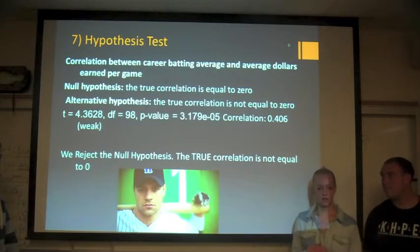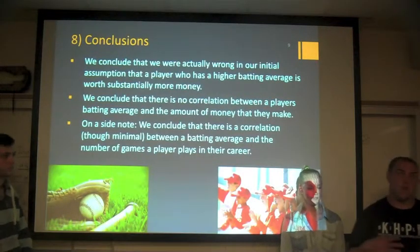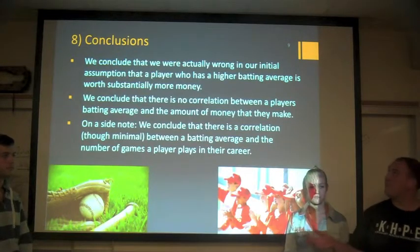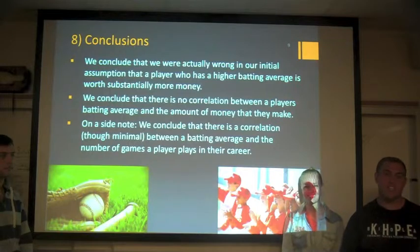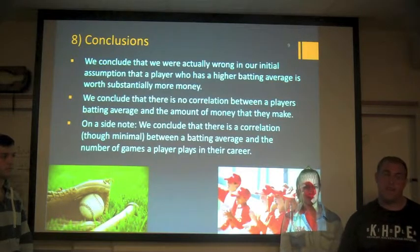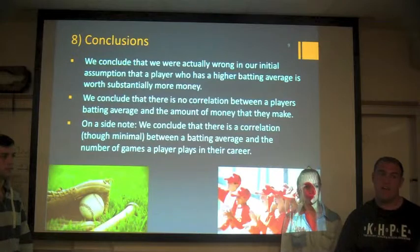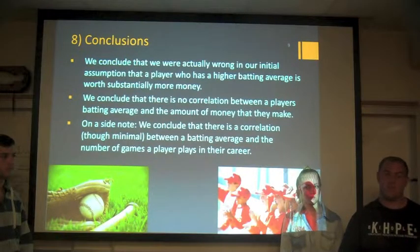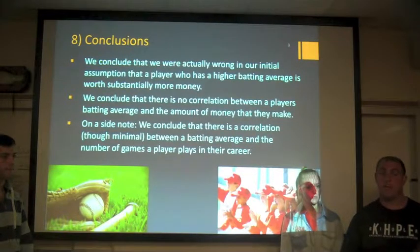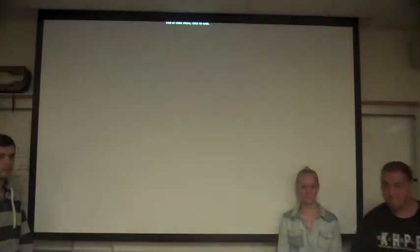With these results, we reject the null hypothesis because the true correlation is not equal to 0. To sum things up: we were wrong in our initial assumption that players with a better batting average make more money. We conclude there is no correlation, or at most a very weak correlation, between batting average and earnings. On a side note, we found there is a minimal correlation between batting average and the number of games a player plays in their career. We reject our null hypothesis. Thank you very much.